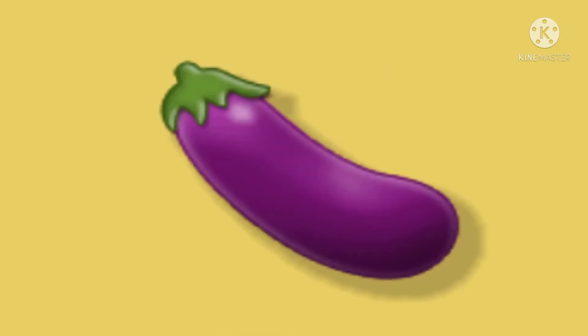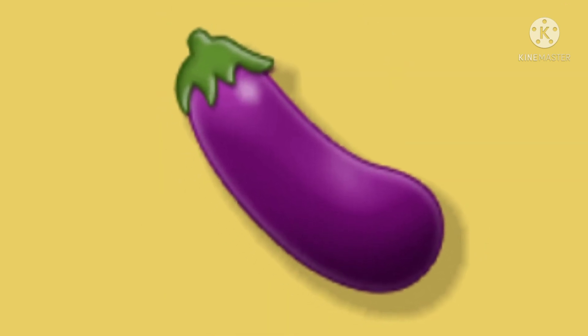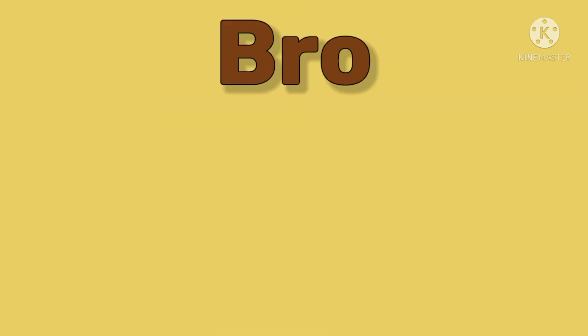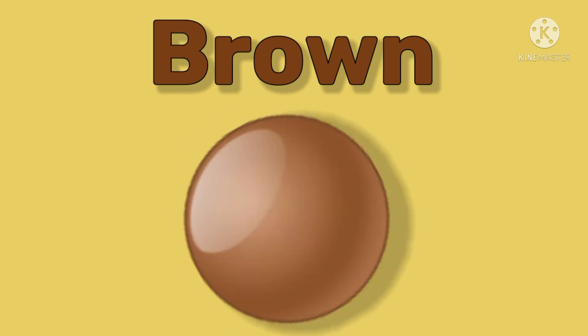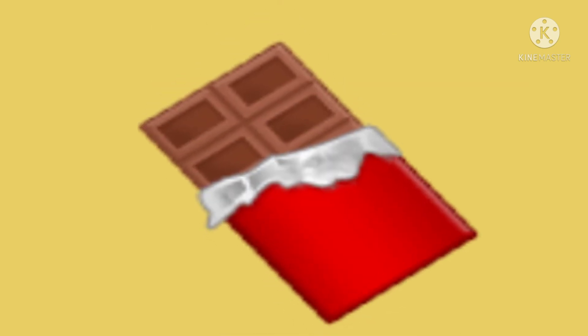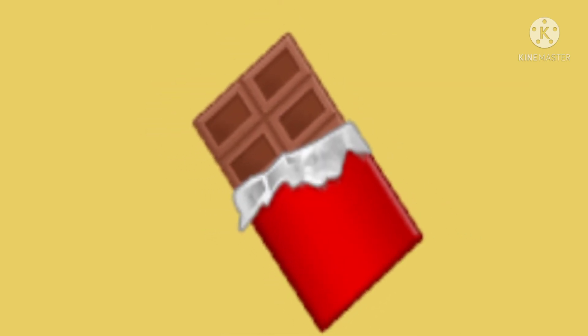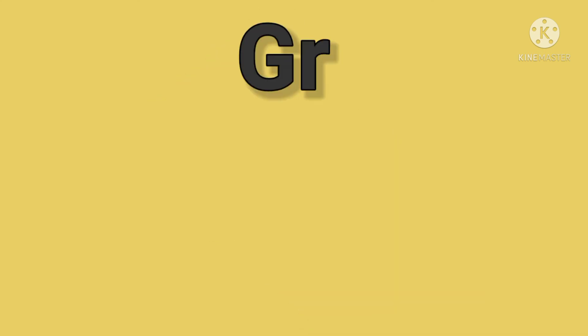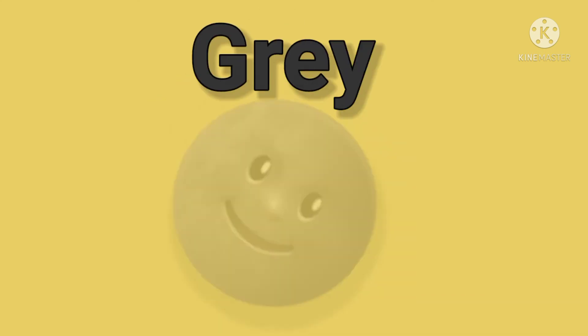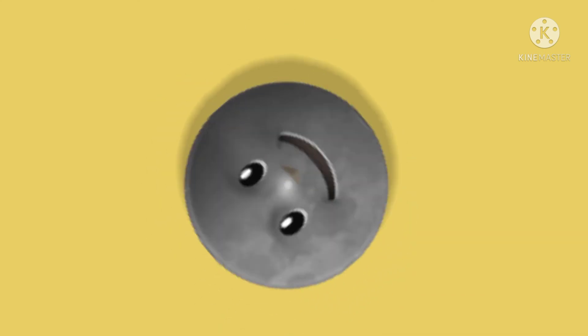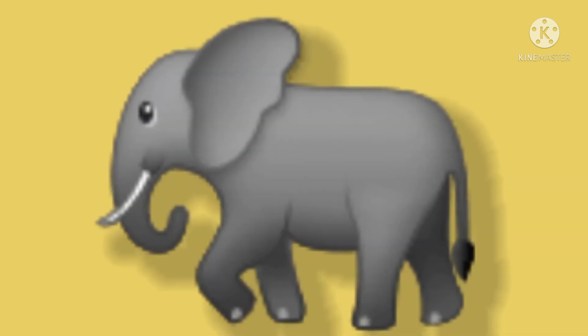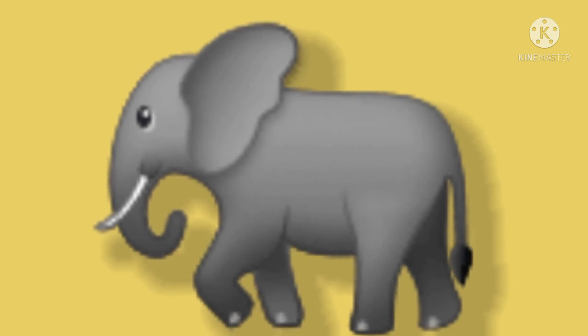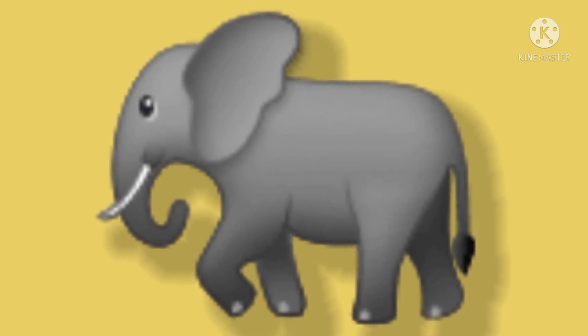Purple. A brinjal is purple. Brown. A chocolate is brown. Gray. An elephant is gray.